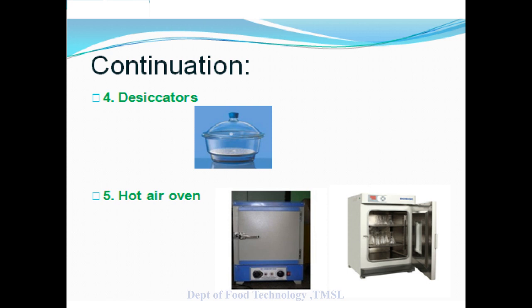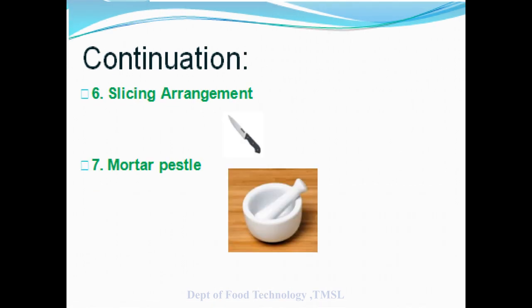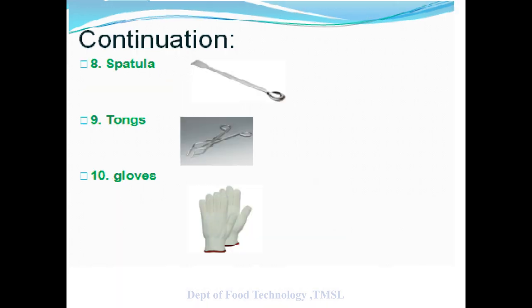Hot air oven next, slicing arrangement or mortar pestle for grinding operation, spatula to take the sample, tongs to take the product in a petri plate and put it in the oven because it is very hot, and gloves. These are the apparatus or equipment needed.